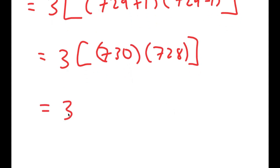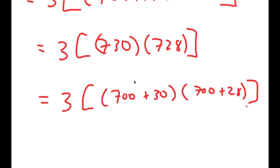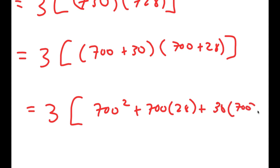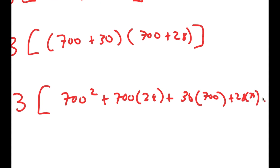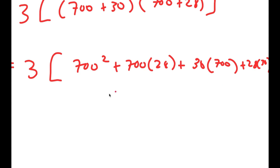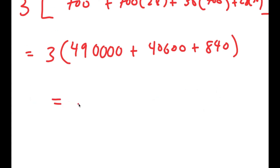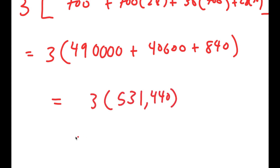From here, I'm going to rewrite this as 700 plus 30 times 700 plus 28. This is equal to 3 times 490,000 plus 40,000 plus 40,000, so this is equal to 3 times 531,440,000 plus 840,000, which is equal to 1,594,320. So this is my answer.